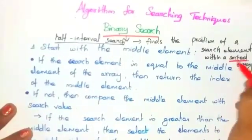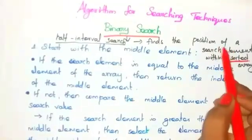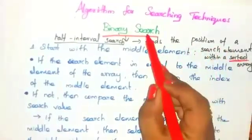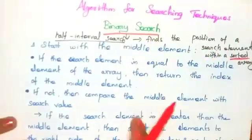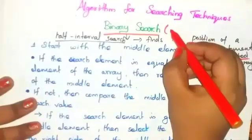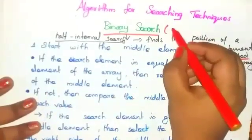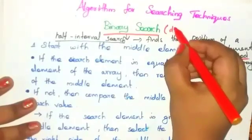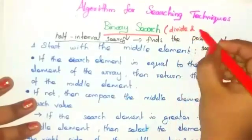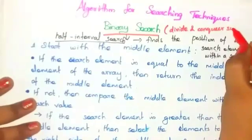The array must be sorted; if the elements are not sorted you cannot apply binary search to that array. Binary search can be done using the divide and conquer search algorithm.